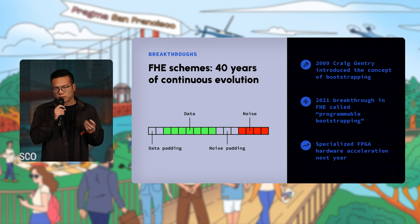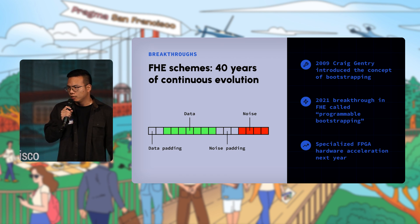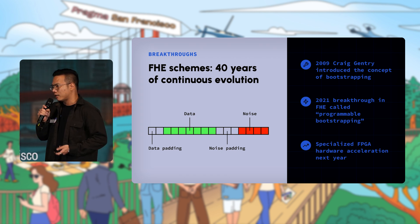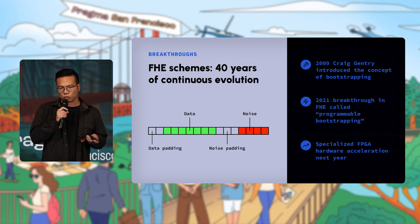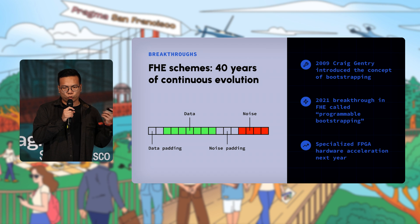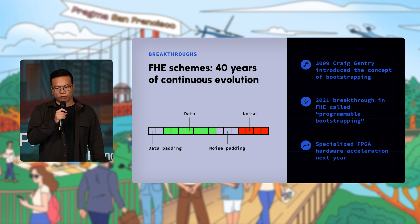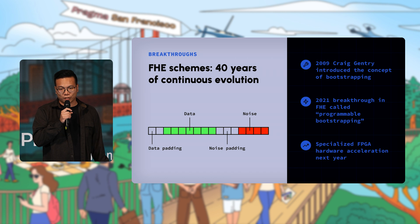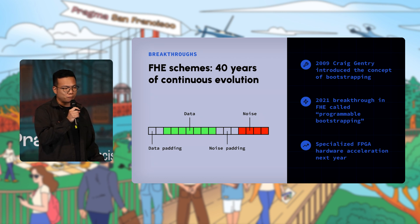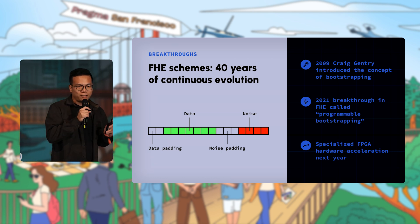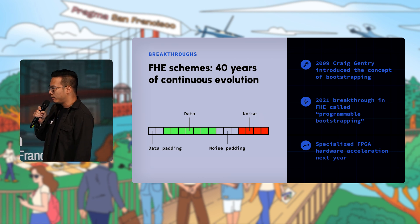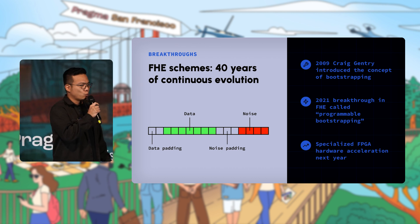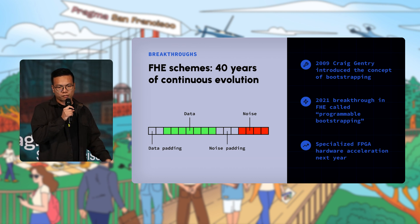The challenge with FHE is that when you encrypt data, you have ciphertext containing data, data padding, noise, and noise padding. As you compute on top of these ciphertexts, noise accumulates until the ciphertext is no longer valid. In 2009, Craig Gentry introduced a breakthrough called bootstrapping — a denoising process that keeps noise in check. In 2021, programmable bootstrapping made this process much faster and efficient.